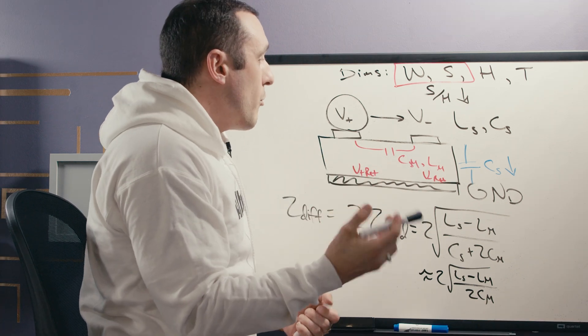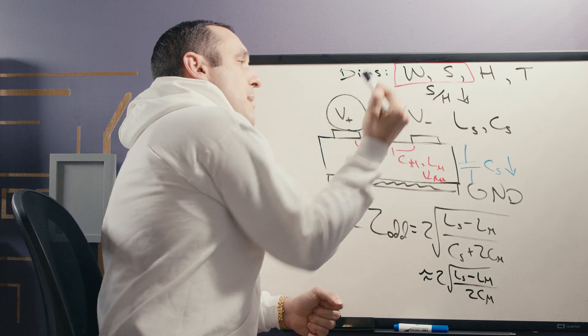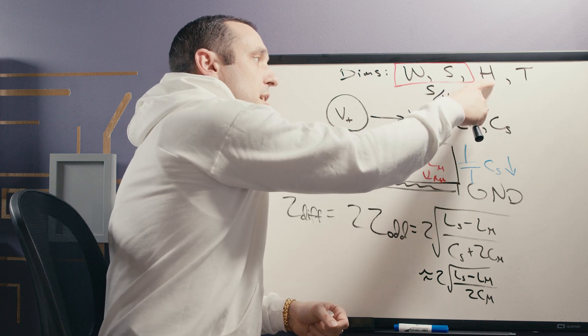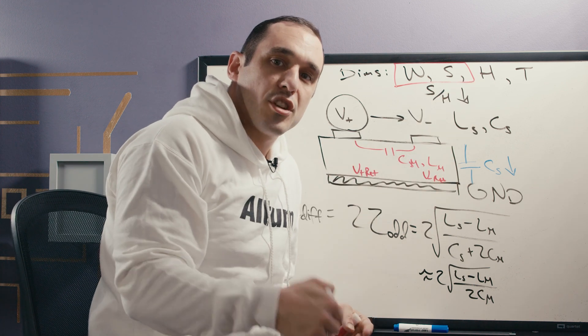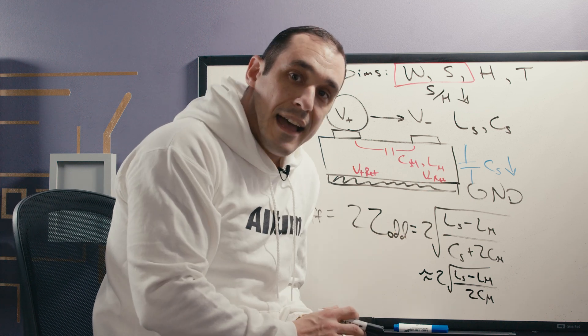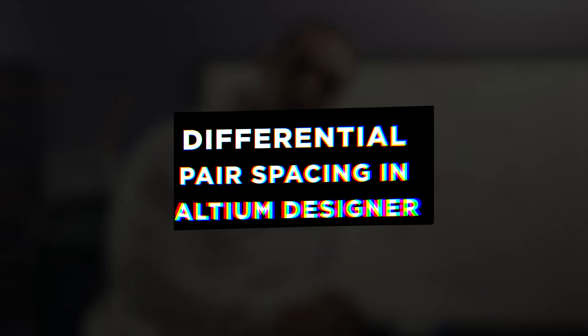Now this all begs the question, what would happen in a PCB if we were to take this spacing value and make it really small and then take this substrate thickness value and make it very large? Can we actually calculate the impedance in that case? Well, as it turns out we can, we can use the tools in Altium Designer. So let's hop into Altium Designer and take a look.